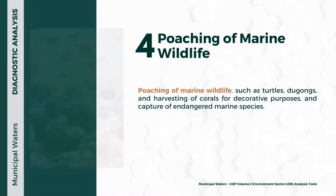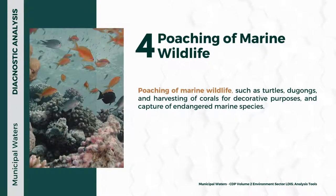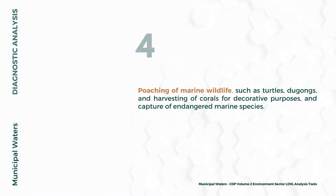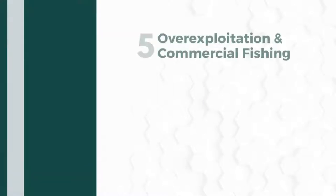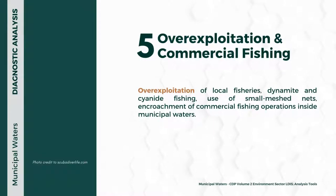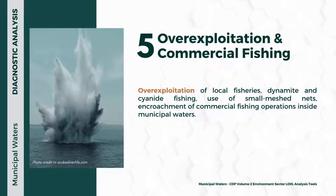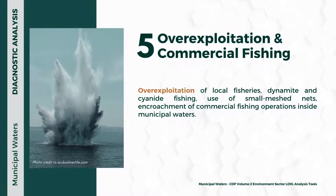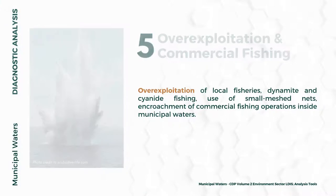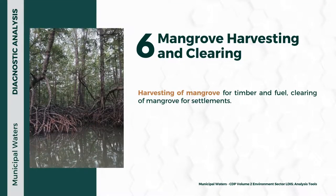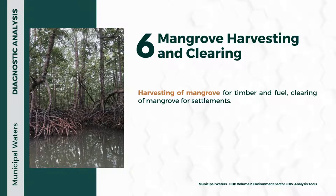Fourth, poaching of marine wildlife such as turtles and dugongs, harvesting corals for decorative purposes, and capture of endangered marine species. Fifth, overexploitation of local fisheries, dynamite and cyanide fishing, use of small mesh nets, and encroachment of commercial fishing operations inside municipal waters. Sixth, mangrove harvesting and clearing — harvesting mangrove for timber and fuel, and clearing of mangroves for settlements.